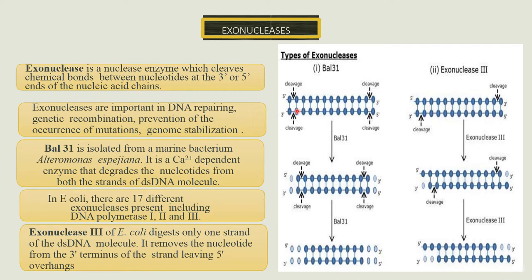In E. coli, there are 17 different exonucleases present, including DNA polymerase 1, 2, and 3. Exonuclease 3 of E. coli digests only one strand of the double-stranded DNA molecule. It removes the nucleotide from the 3' terminus of the strand, leaving the 5' end overhanging.